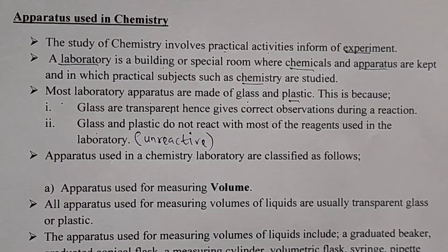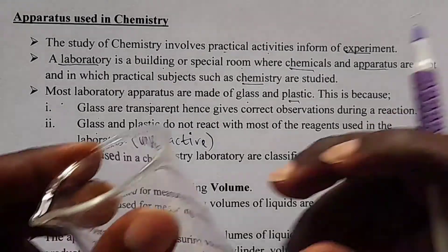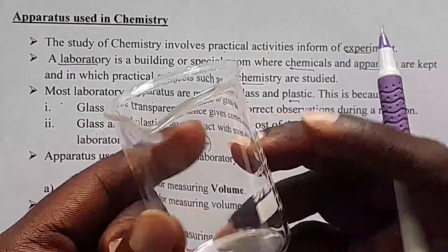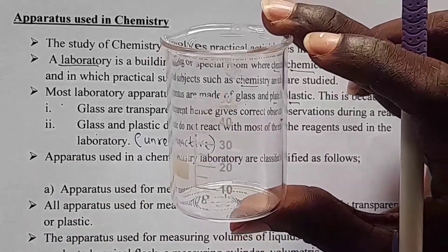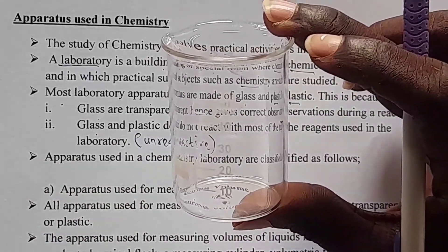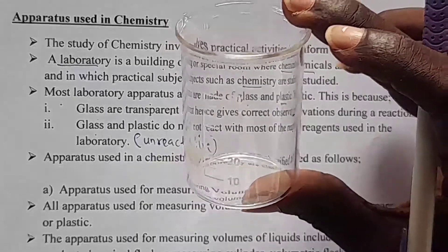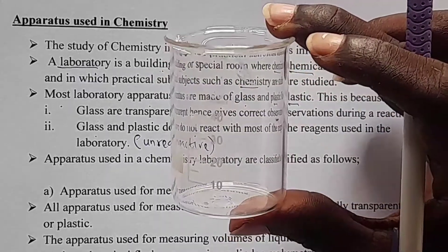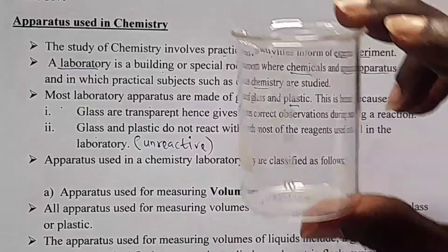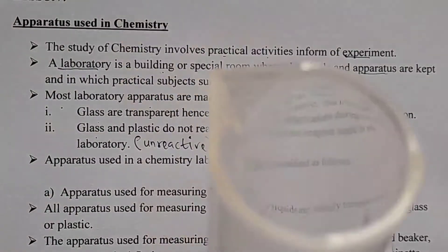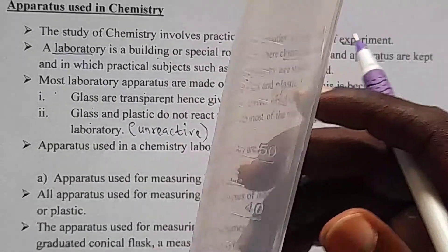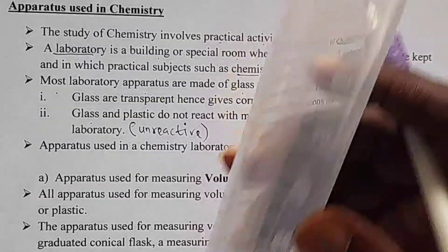We have some apparatus that are made up of glass. It has readings and it is glass, meaning you can read what is inside, you can observe what is inside, and you can read the meniscus very well. That is an example of an apparatus made up of glass. We can also have one made of plastic. Here we are using a glass measuring cylinder — you can see the meniscus.